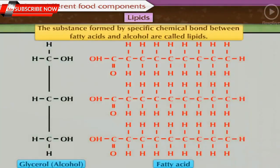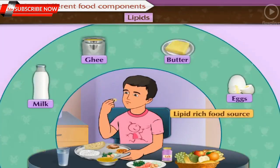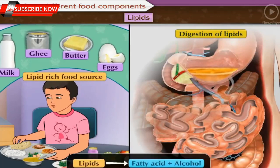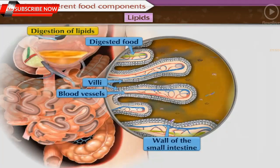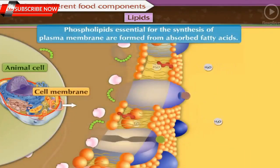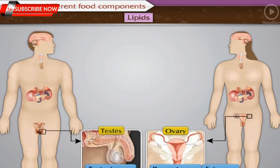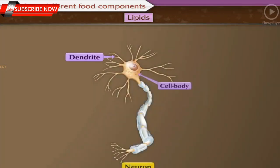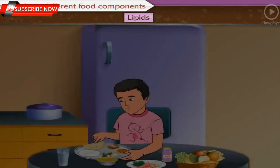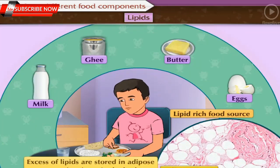Lipids are substances formed by a specific chemical bond between fatty acids and alcohol. When we eat foods rich in lipids, after digestion they are converted into fatty acids and alcohol. Fatty acids are distributed throughout the body after absorption. From these, cells produce various substances — for example, phospholipids essential for plasma membrane synthesis, and hormones like progesterone, estrogen, testosterone, and aldosterone, as well as the covering around the axons of nerve cells. Each gram of lipid gives us 9 kilocalorie energy. Excess lipids are stored in adipose connective tissue.